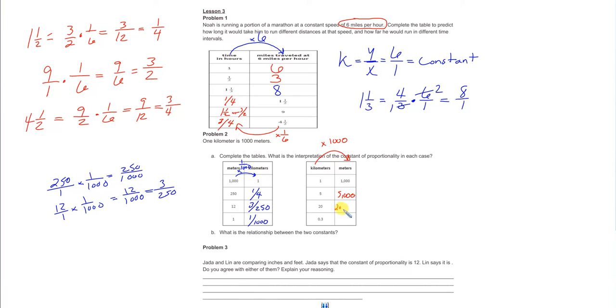20 times a thousand is 20,000. This one might be tougher for you to do. What's a thousand multiplied by 0.3? That's just going to move your decimal three places to the right. So one, two, three. That would be the same as 300 meters. It's the same as three-tenths of a kilometer.